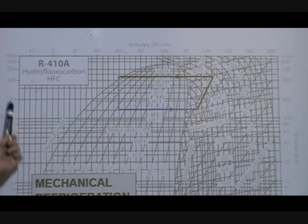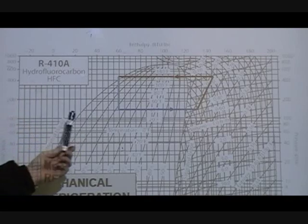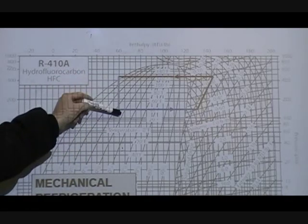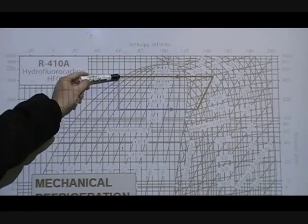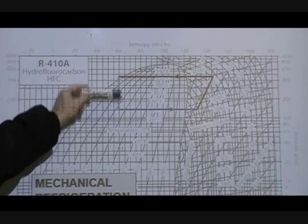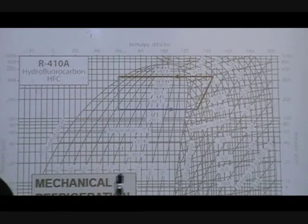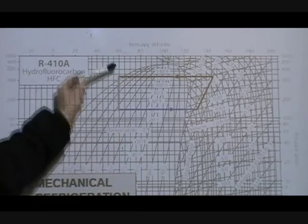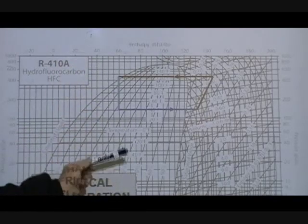So just keep in mind, your pressures are absolute. If you want gauge pressure, you subtract 15. Now, this is the phenomenon of the refrigerant going through the metering device. The pressure drops, the temperature drops, but no refrigeration effect occurs. So it all happens on a vertical line.